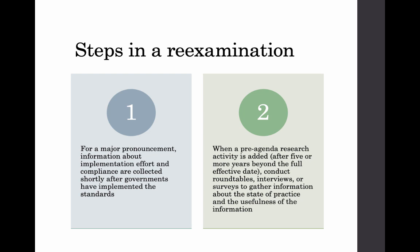In broad strokes, a re-examination of a major pronouncement will begin not long after governments have implemented it. GASB will do what it refers to as post-implementation review, or PIR phase one, where it will collect information from a random selection of governments that have implemented the standards and reach out to them asking for information about the effort and cost associated with applying those standards while it's still fresh in their minds. Then, sometime after the pronouncement has been effective for at least five years, the GASB will add a pre-agenda research activity and conduct roundtables, interviews, surveys, and so on to collect information to meet those re-examination objectives.